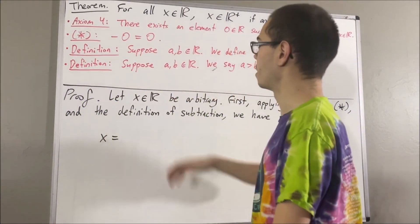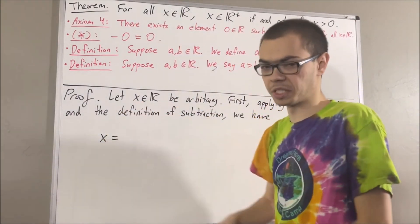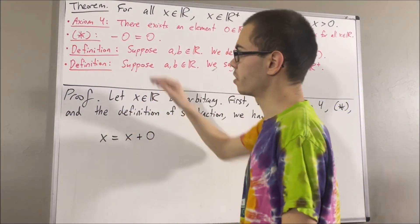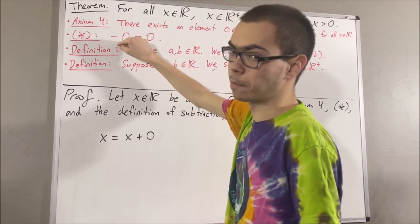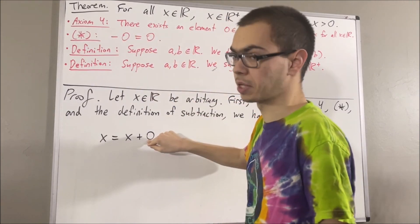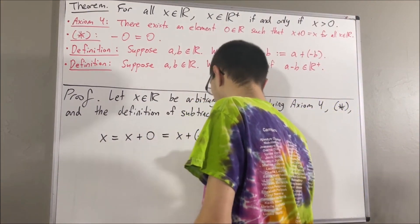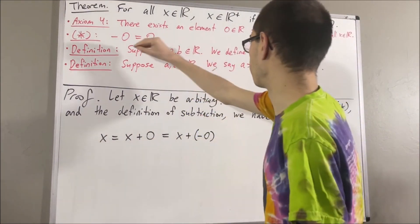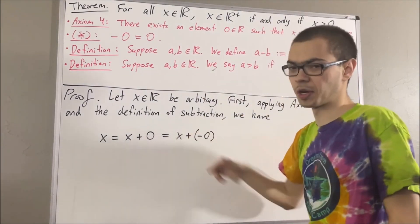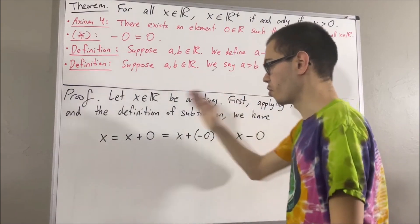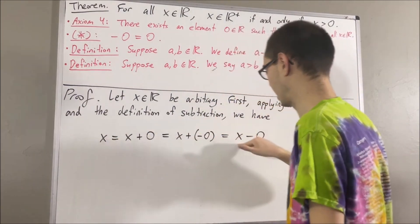By axiom 4, we know that x is equal to x plus 0. And then, according to star, 0 is equal to the negative of 0, so we can replace the 0 here with the negative of 0. Then by the definition of subtraction, x plus the negative of 0 is equal to x minus 0. So through this chain of equalities, we see that x is equal to x minus 0.